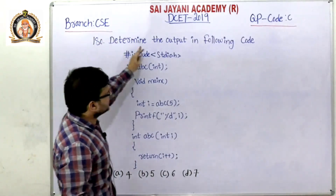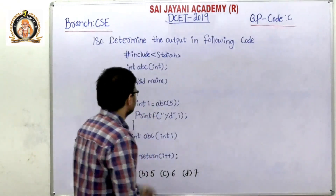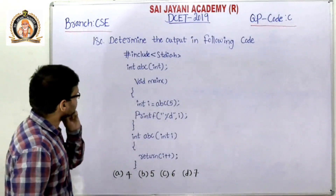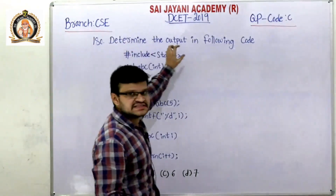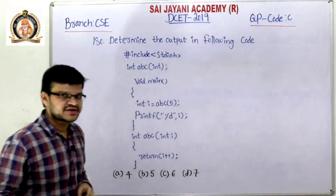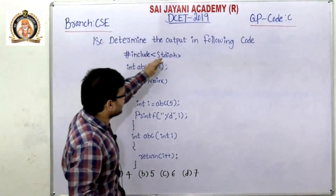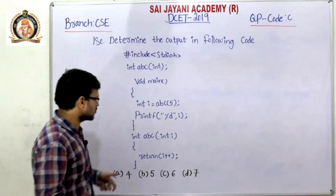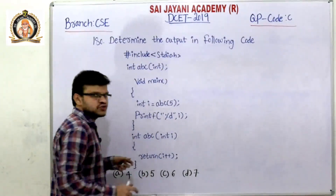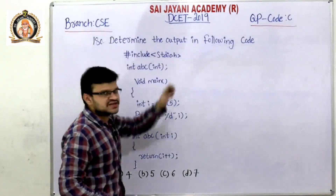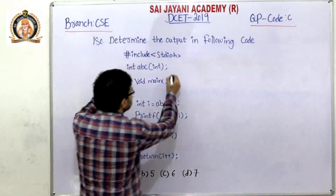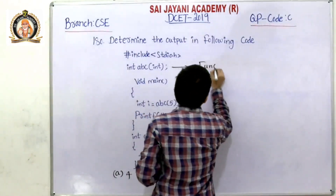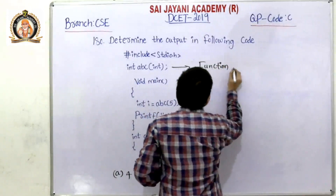Question number 180: determine the output of the following C code. We have the hash include stdio.h header file, which contains standard input/output functions like printf and scanf. Since we have a printf statement, we declare the stdio.h header file. Then we have 'int abc' — this is the function declaration part, where we are declaring the function abc of type integer.